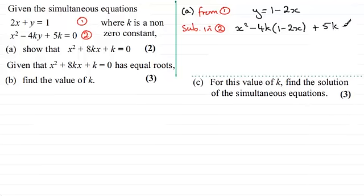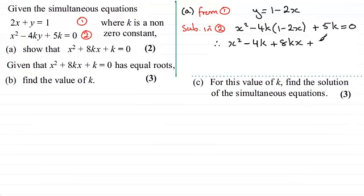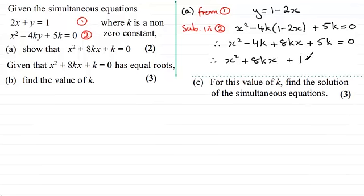Expanding the brackets, we therefore have x squared minus 4k, and then minus 4k times minus 2x gives us plus 8kx, and then plus 5k equals 0. Grouping the terms: x squared plus 8kx, and then 5k minus 4k gives plus k, equals 0. And that is what we had to show.